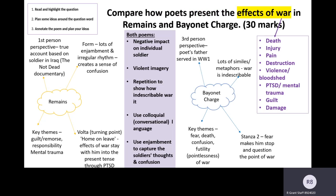The steps are in the left-hand corner if you want to refer to those. The question is: compare how poets present the effects of war in Remains and Bayonet Charge. It's worth 30 marks, and I'm going to highlight 'the effects of war' because that's our question focus.